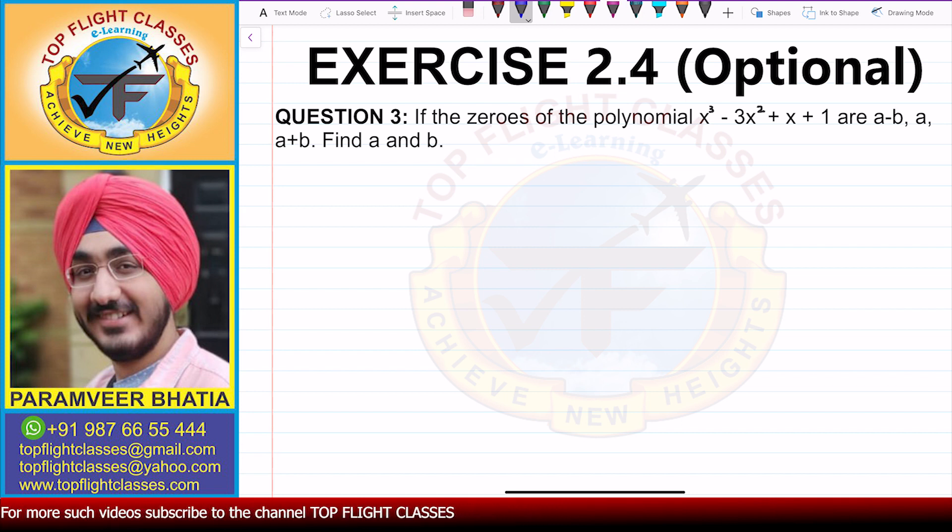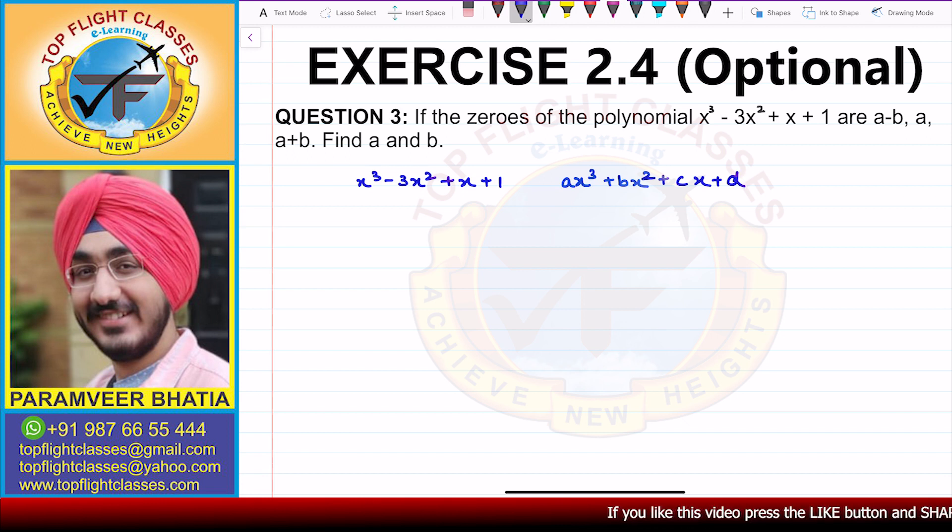I have the given polynomial x³ - 3x² + x + 1. If I compare it with ax³ + bx² + cx + d, on comparing I will get that a = 1, b = -3, c = 1, and d = 1.